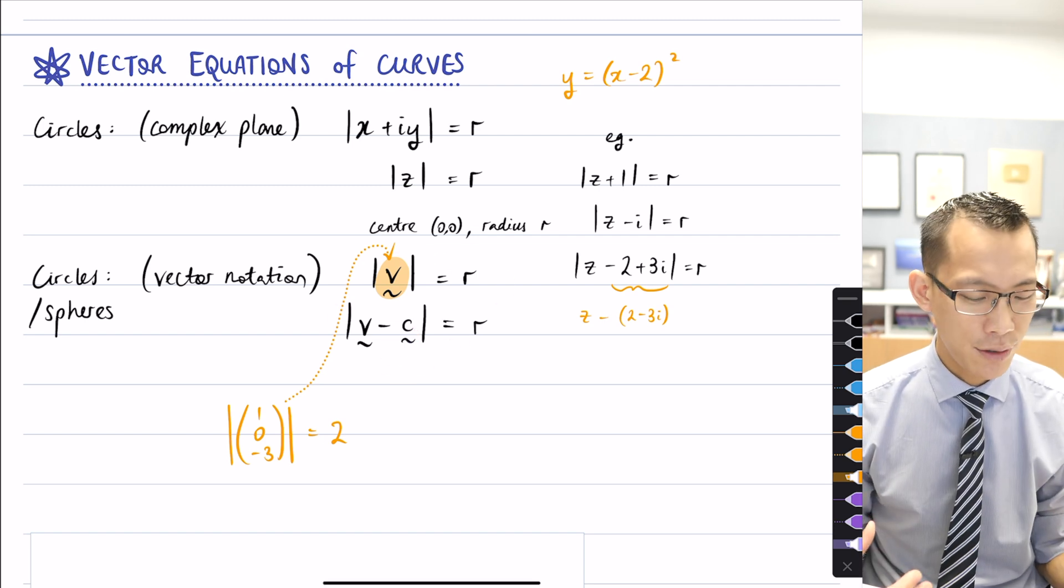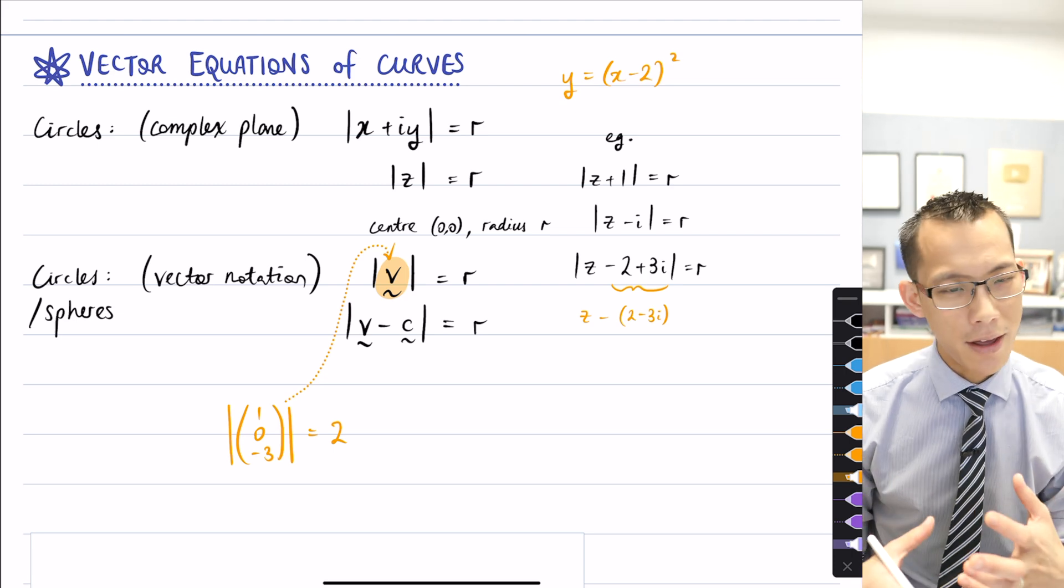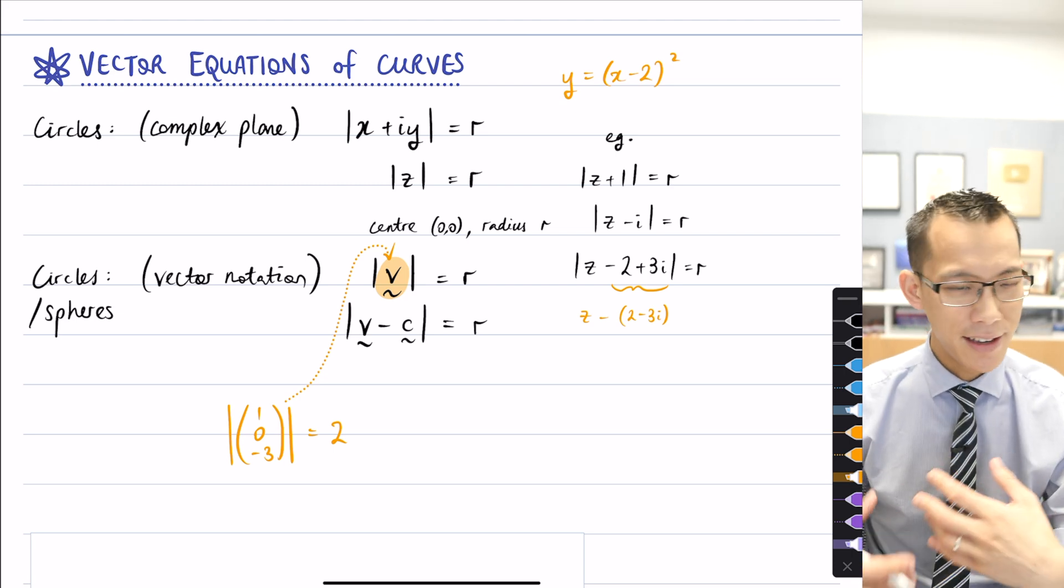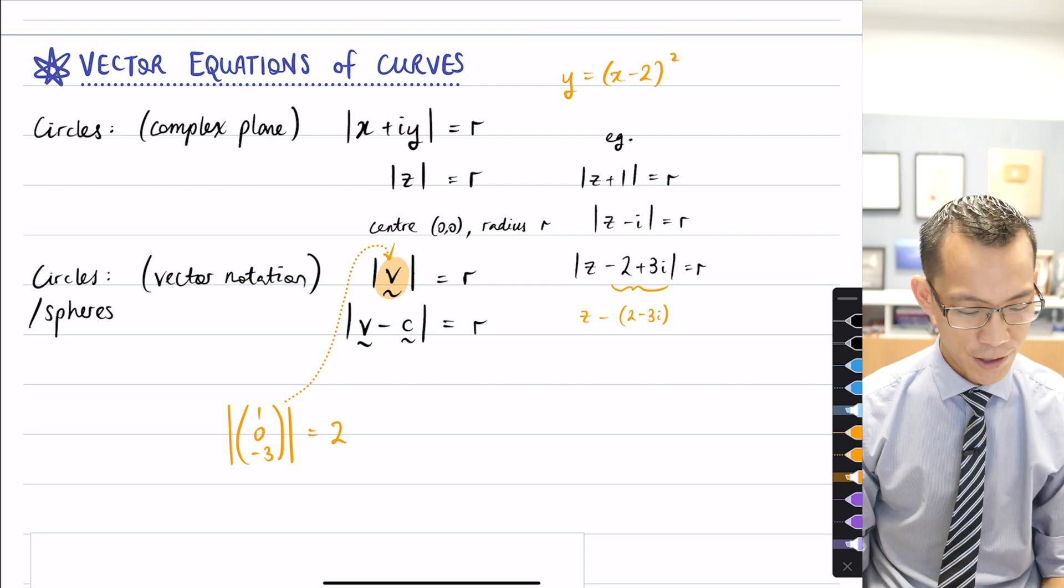But to me, this is a callback to what we saw with the dot product. The dot product in two dimensions is the same as the dot product in three dimensions.